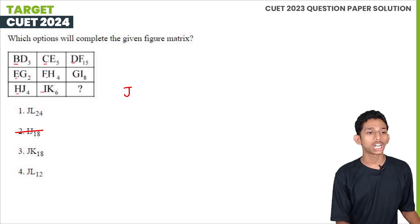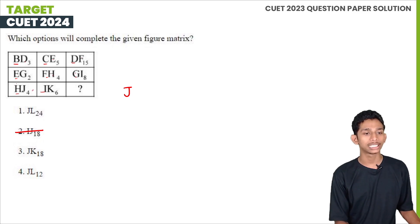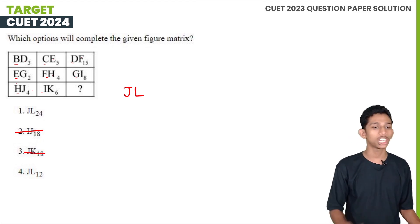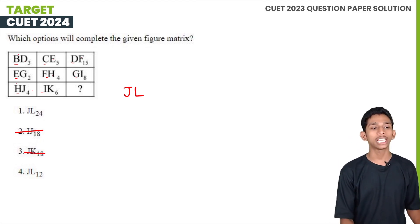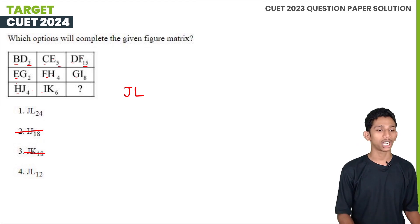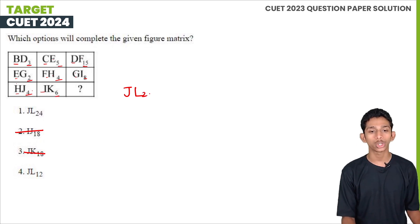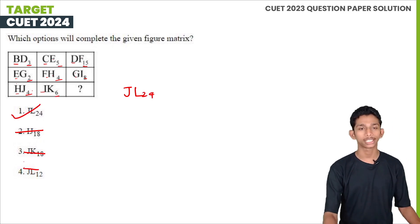Next term is D, E, F, G, H, I, J, K, L. We can add this option. Next term: 3 into 5 is equal to 15. Next, 2 into 4 is equal to 8. 4 into 6 is equal to 24. Option is 1, and the right answer is right.